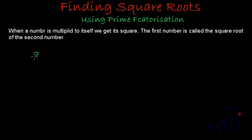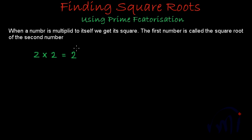If I take 2 and want to find its square, the definition says: when a number is multiplied by itself, we get its square. So to find the square of 2, we multiply 2 by itself — that is 2 multiplied by 2. This is written as 2 to the power 2, because 2 is getting repeated two times.